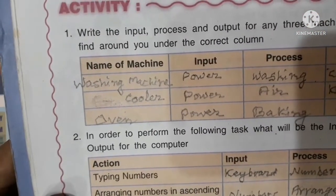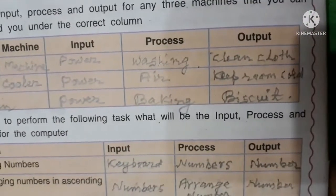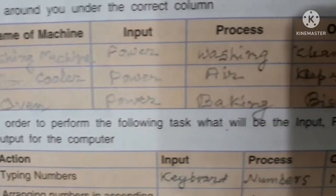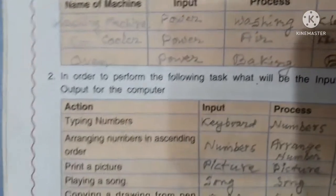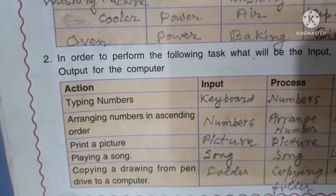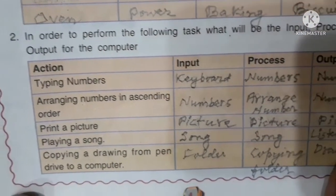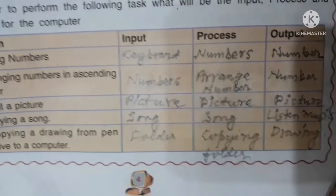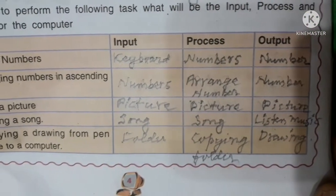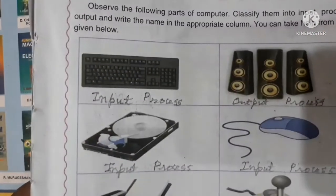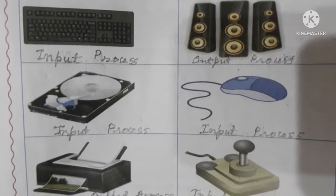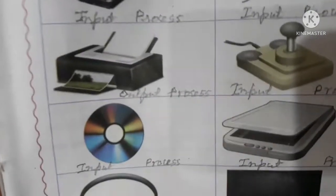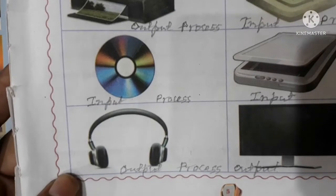Example: for a washing machine, name the input, process, and output. Activity: in order to perform the following task, what will be the input, process, and output for the computer? For example, typing numbers using the keyboard — numbers are the input. If you want to write your answers, please pause the video. Practice identifying IP (input/process) and OP (output/process) for various tasks.